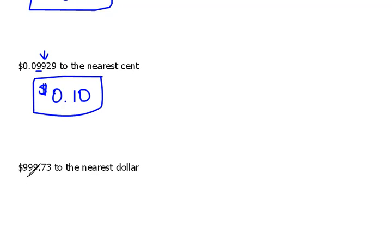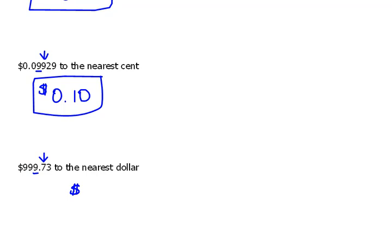Our last one: we have this number rounded to the nearest dollar. Think about it — this is $999.73, just a little bit shy of $1,000. The nearest dollar is the ones position, so we look one place to the right. This number is five or more, so it says to round up. By rounding this nine up, it affects the next one and the next one. So rounded to the nearest dollar, this would be $1,000.